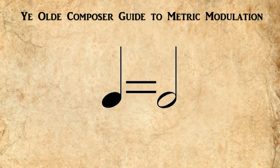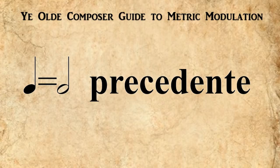It's worth noting that this method of notating metric modulation is exactly the opposite of what composers used to do. Composers used to mark it so the new quarter note equals the old half note — sometimes they would even write explicitly 'precedente,' meaning the new quarter note is equivalent to the preceding half note. Notation expert Elaine Gould in her book 'Behind Bars' recommends not using this older style now as it's more ambiguous. Most contemporary composers use the new method.